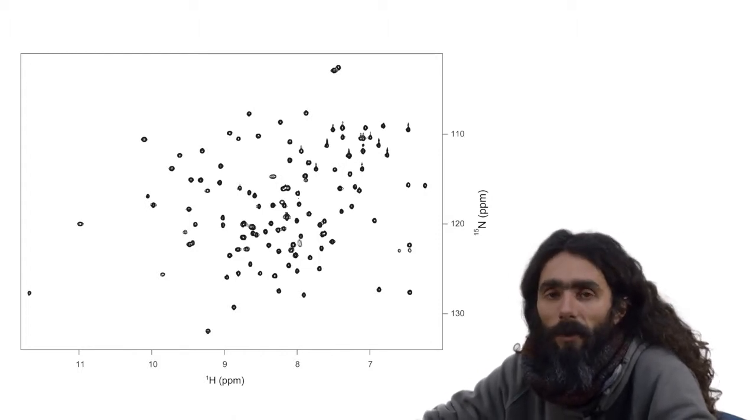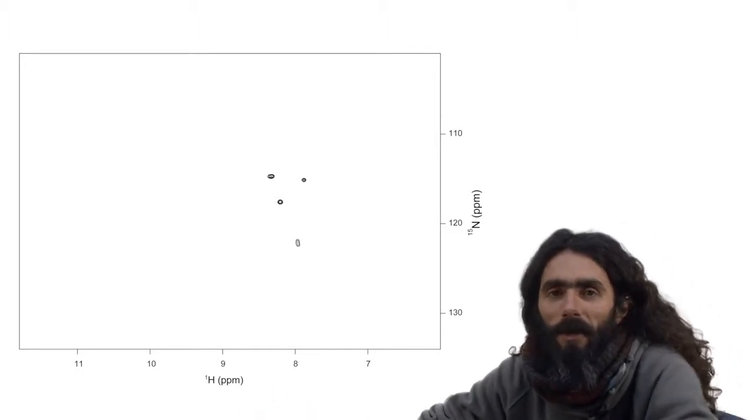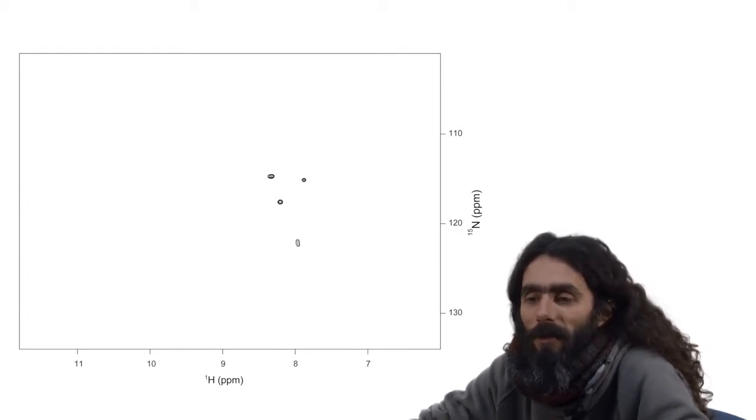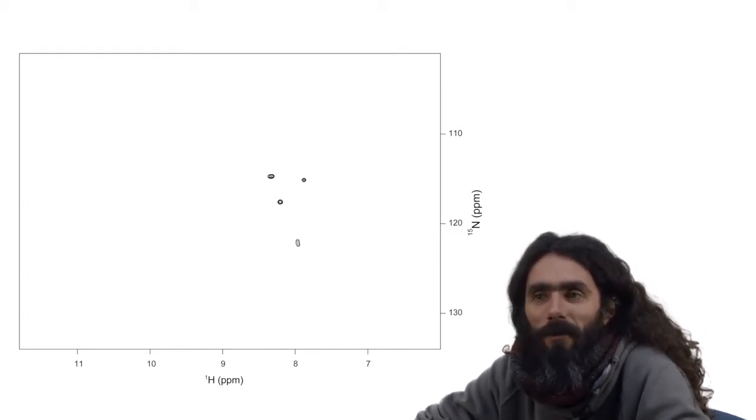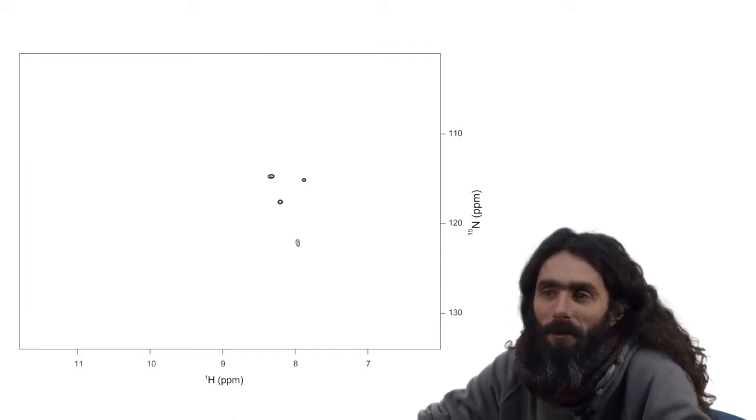But when you then try to observe that same protein inside a simple bacterium like E. coli, the spectrum turns out to be this kind of disaster where there are very few peaks that we can actually follow. So this is the problem that we're trying to solve.